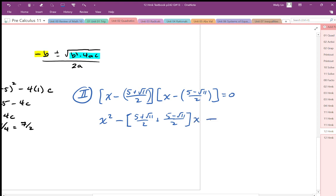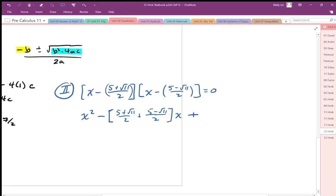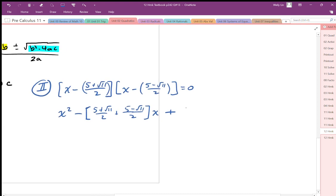And then we're going to multiply those last two terms together. So when we multiply that together, I'm going to end up with 5 plus root 11 over 2 times 5 minus root 11 over 2. And that's going to be all equal to 0.